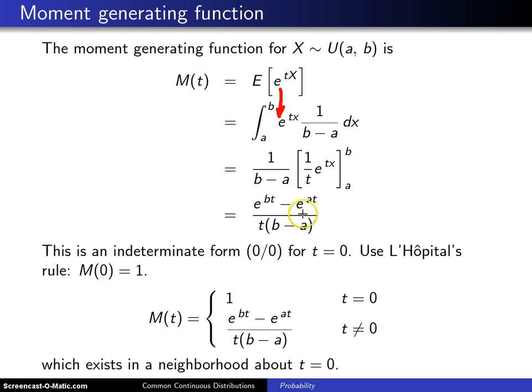and you differentiate the numerator with respect to t, and differentiate the denominator with respect to t, you will wind up with b minus a divided by b minus a at t equals 0, and that is 1.